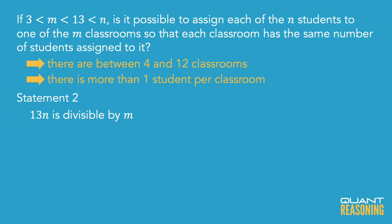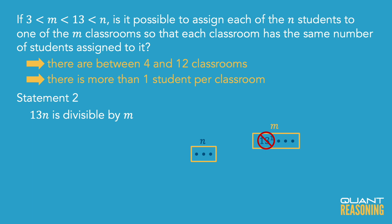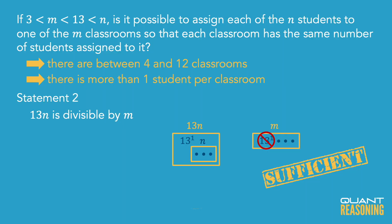Remember, we know that m is between 4 and 12. Is it possible, given that m has to be one of those numbers within the range of 4 to 12, that this extra factor of 13 is the reason that 13n is divisible by m, and when you take away that extra factor of 13 you lose the divisibility? The answer is no, it is not possible. Why? Because m doesn't have a factor of 13 in it — m is one of the numbers between 4 and 12. So since that extra factor of 13 is not the reason that 13n is divisible by m, n on its own, without the extra factor of 13, must also be divisible by m. Therefore, statement 2 is sufficient on its own, and the correct answer is B.